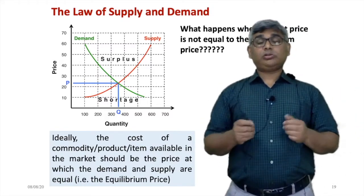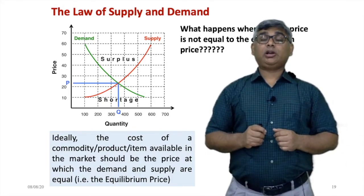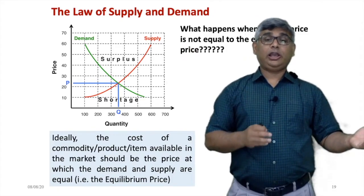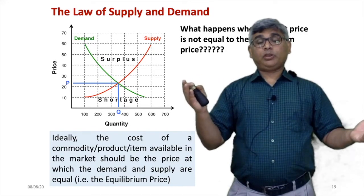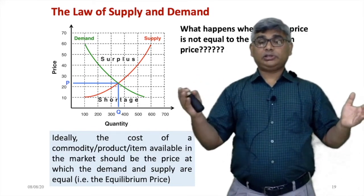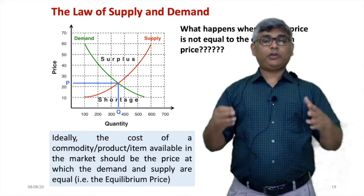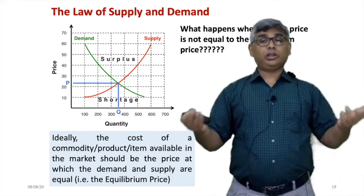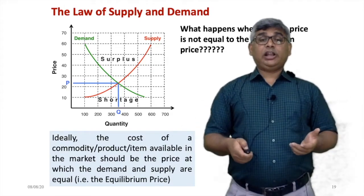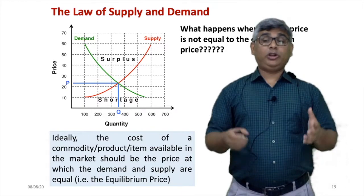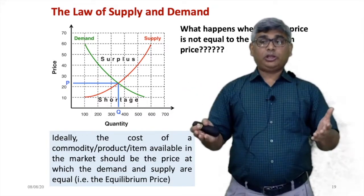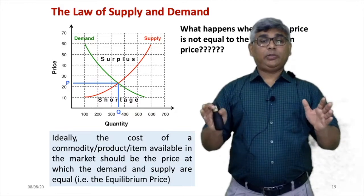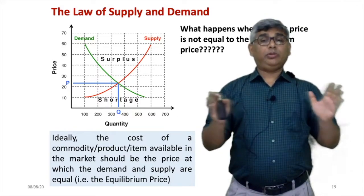Shortage is also detrimental — if there is a shortage, the consumer might switch to a different alternative product available in the market. If a complementary or equivalent product is there, the consumer will switch over, and because of just shortage we are losing customers. The ideal point is to operate a business where supply and demand are both equal, and the costing should correspond to the equilibrium price where supply and demand are equal.